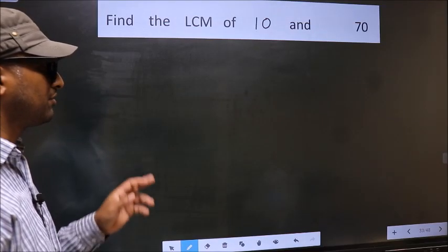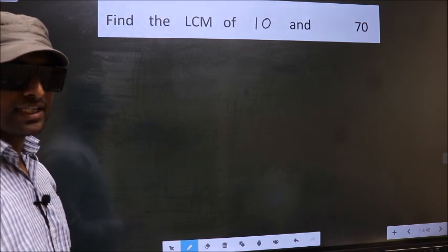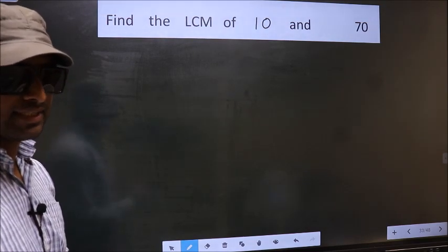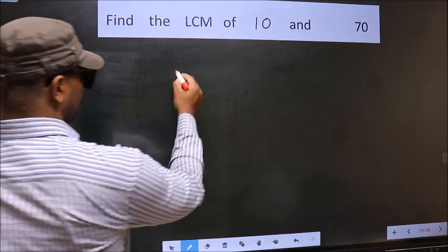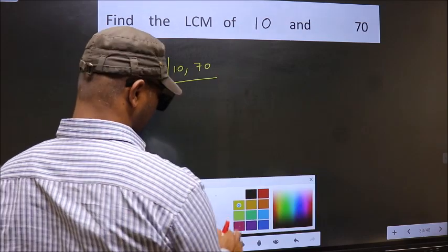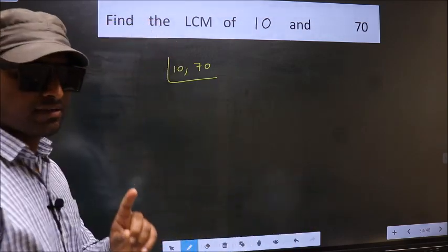Find the LCM of 10 and 70. To find the LCM, first we should frame it in this way. That is 10, 70. This is your step 1.